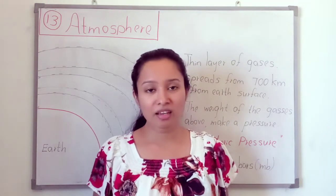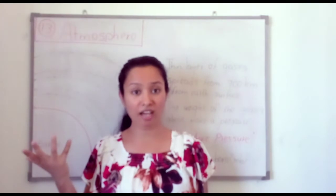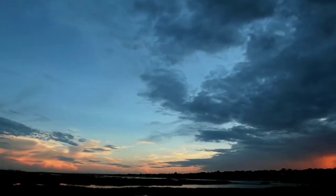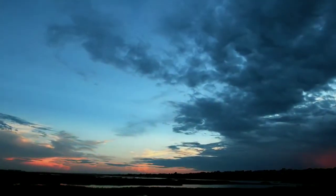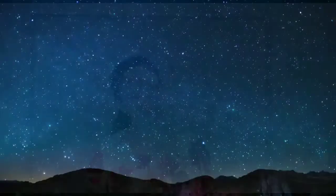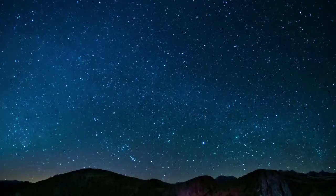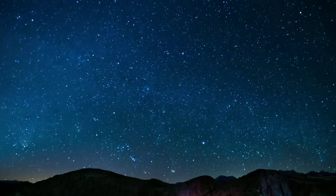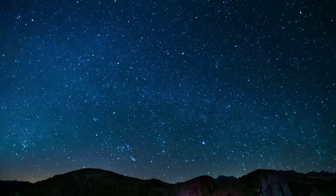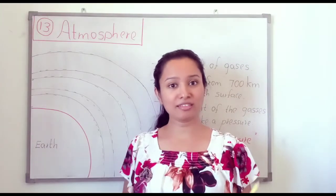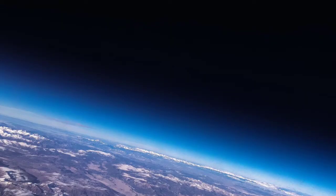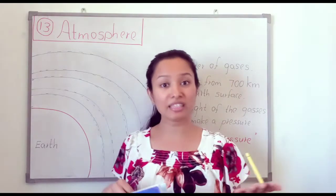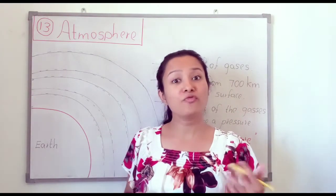Think about this: when you look at the sky in the afternoon on a sunny day, you can see the blue sky. Sometimes you can see clouds also. At night time, when you see the sky, you can see thousands of stars, and there are planets and sometimes there is the moon. We can see all these objects through the atmosphere.